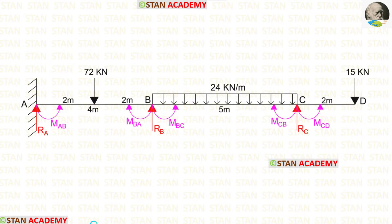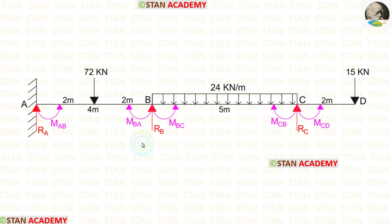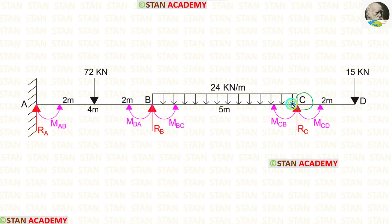In this beam, we have to find 5 moments in total. At the fixed support, there will be a moment MAB. At joint B, there are 2 moments: MBA and MBC. At joint C, there are also 2 moments: MCB and MCD. So, totally, we have to find 5 moments.